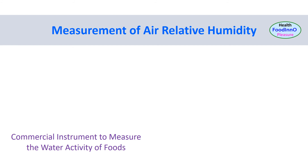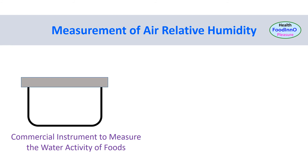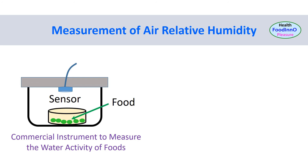In commercial water activity measurement, a small chamber and a sensor are used to measure the relative humidity of the air after equilibrium. When a small chamber with low headspace is used, moisture loss from the sample is minimal to reach equilibrium within the headspace — much smaller compared to the large chamber used in the isostatic method.